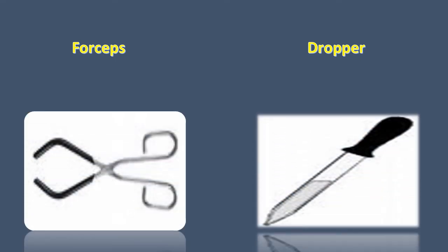Here we have the two final ones. We have the forceps, which look like scissors but are not scissors — they are used to pick up small items. And then we have the dropper, which is used to take up a small amount of liquid and drop little drops of liquid, for example like iodine. So those are all the laboratory tools used in the laboratory or science lab by a scientist, teacher, or lab instructor when carrying out a lab.